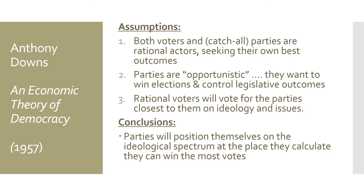Political scientist Anthony Downs, in the 1950s, gave us an economic model for understanding how and why a party would alter its ideological message. This is called rational choice theory, based on the idea that both political parties and voters are rational actors trying to maximize their own utility by making rational choices in their own self-interest. Downs' theory rests on three important assumptions: first, that voters and catch-all parties in democracies are rational actors; second, that parties are opportunistic — they want to win and control legislative outcomes; and third, that rational voters will vote for the party closest to them on ideology.